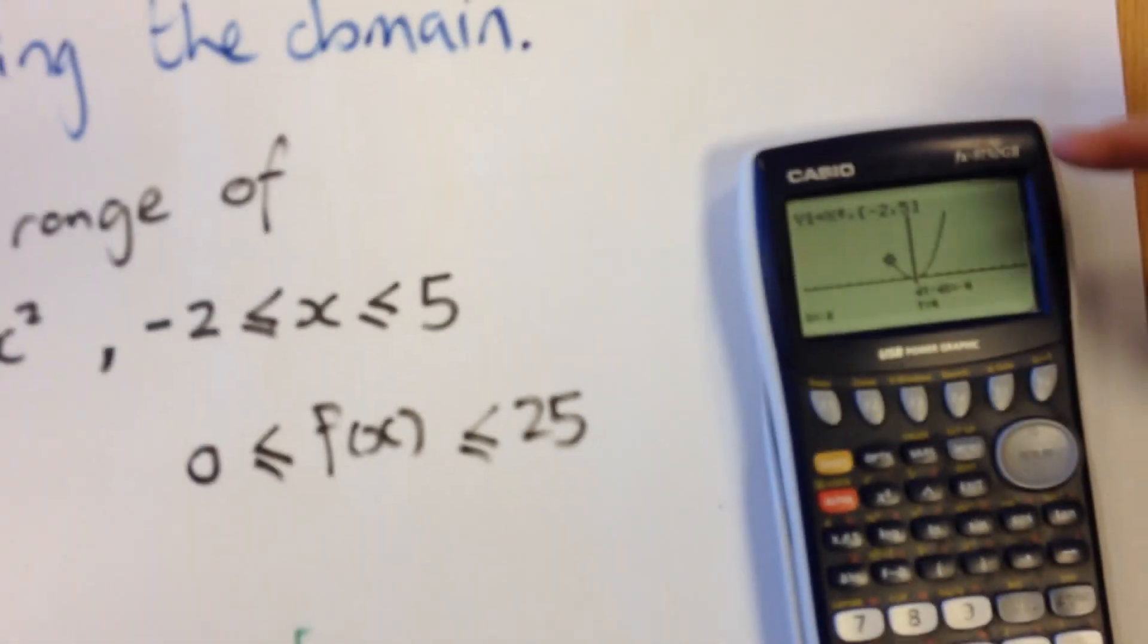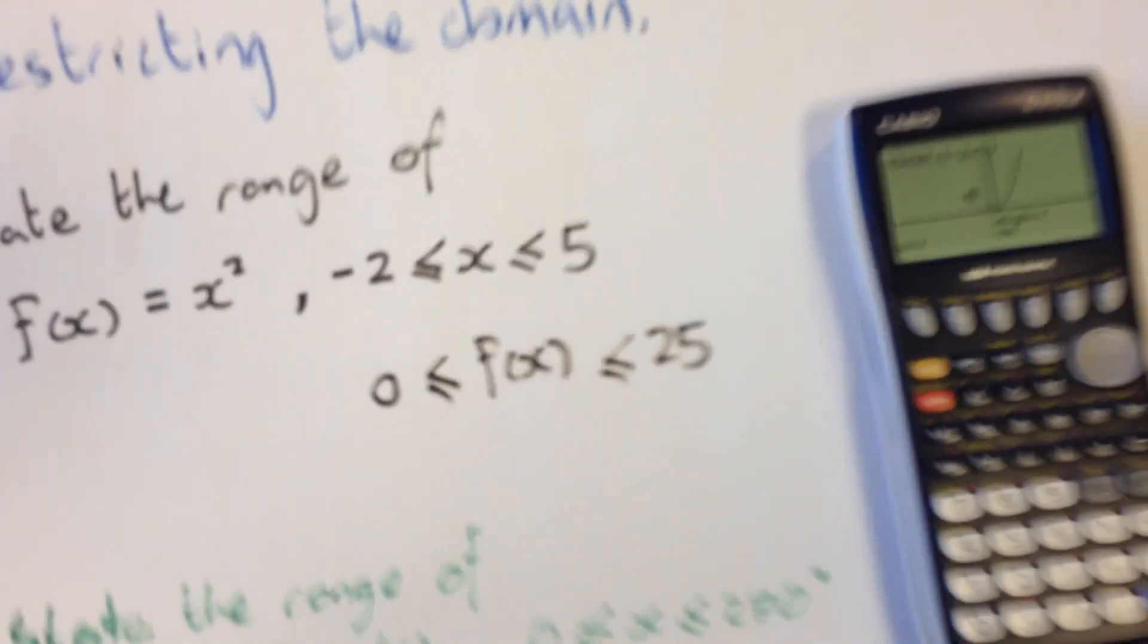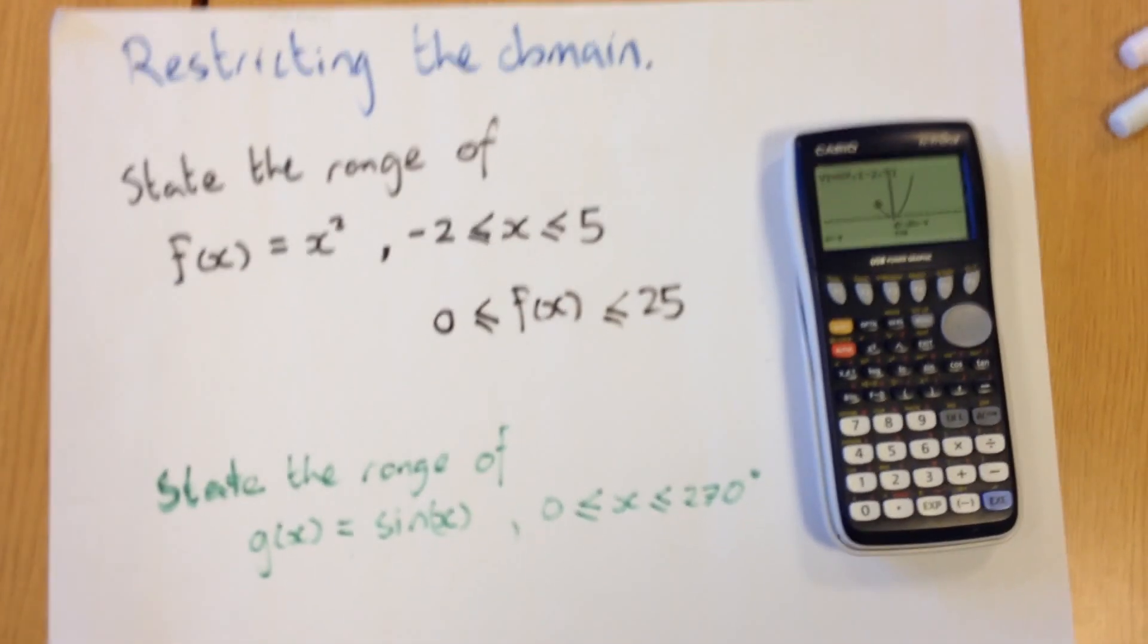That's clearly not the smallest value. The smallest value is down there. So the nice thing about sketching it is you get to see that really nicely and clearly. Cool. Let's have a look at the second one.